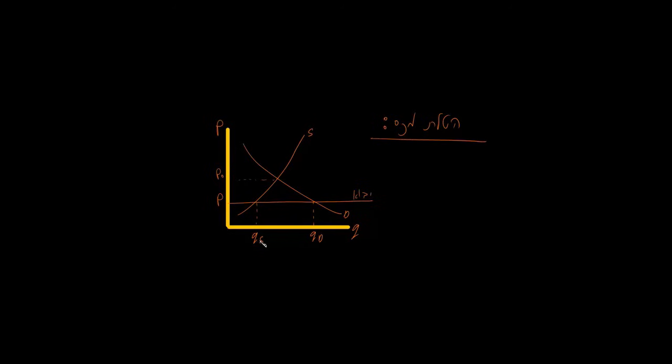But at this lower world price, our local producers aren't quite as thrilled. They're only willing and able to produce this much of the good, the quantity we're labeling QS for domestic supply. It makes sense. A lower price means less profit, so there's less incentive for them to produce a ton of it. On the flip side, for consumers, that low price is a total steal. So they want to buy a whole lot more.